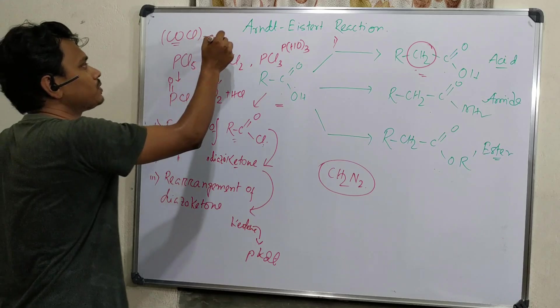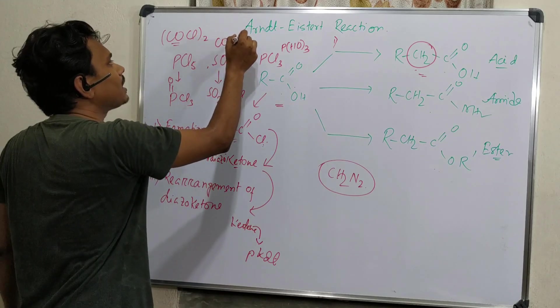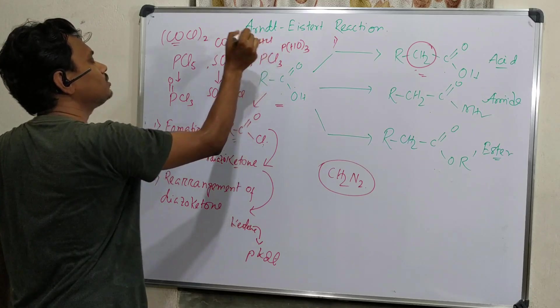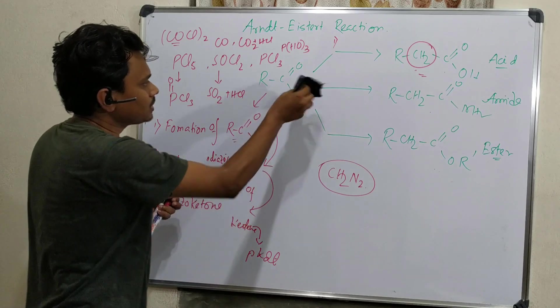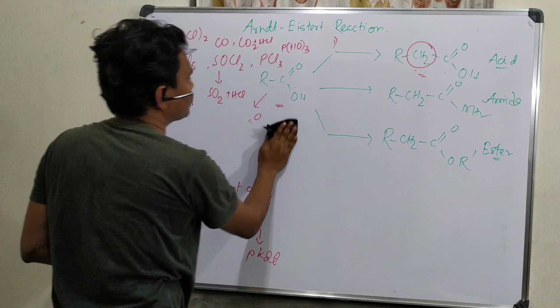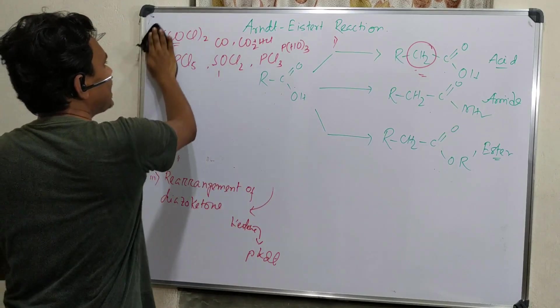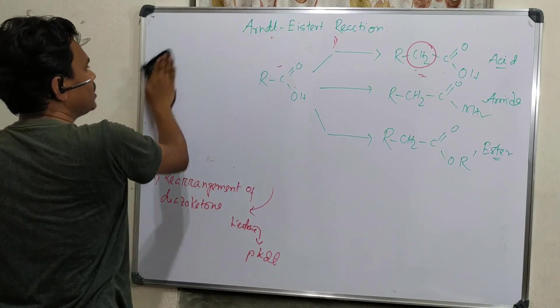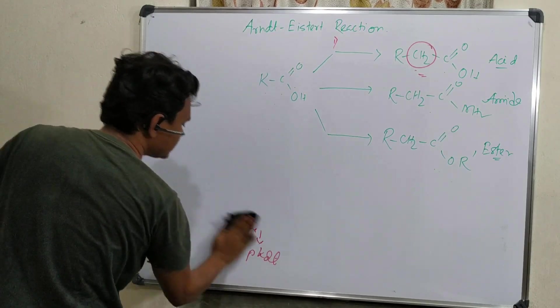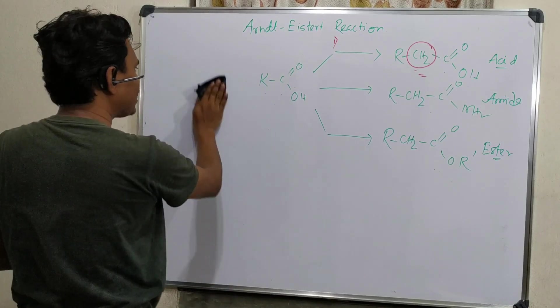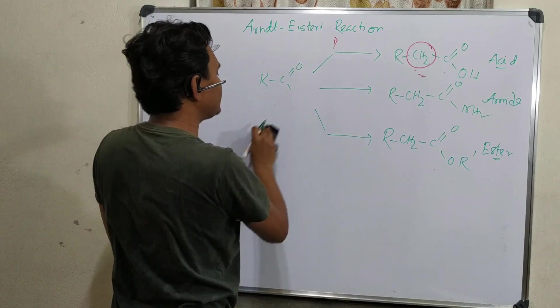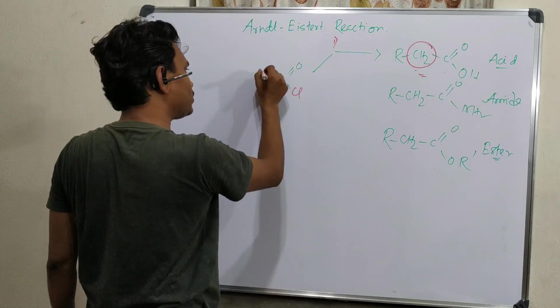If PCl3, it forms phosphorous acid. Even oxalyl chloride is a reagent. When it reacts, it produces carbon monoxide, carbon dioxide, and HCl. These are the reagents that, when reacted with carboxylic acid, produce corresponding acid chloride derivatives.